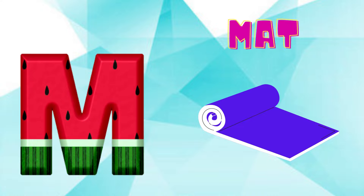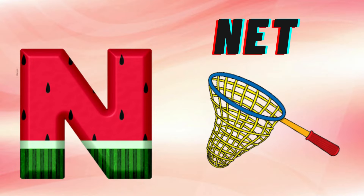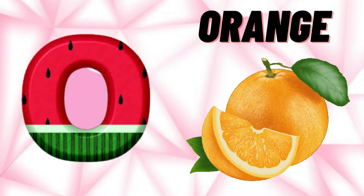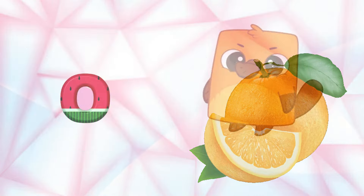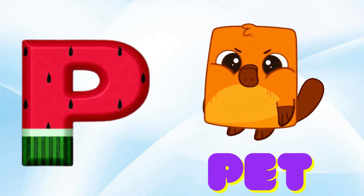M is for Mat, M-M-Mat. N is for Net, N-N-Net. O is for Orange, O-O-Orange. P is for Pet, P-P-Pet.